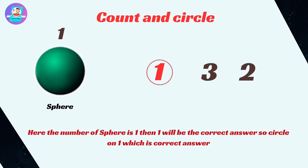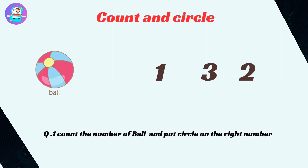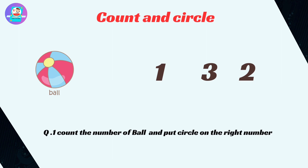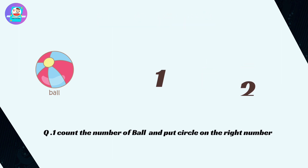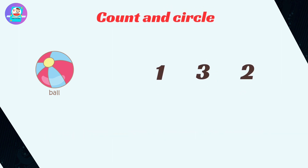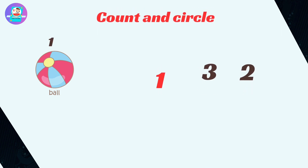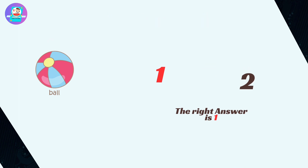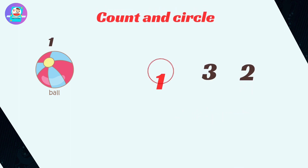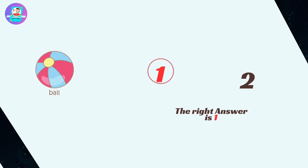Let's start. Count the number of ball and put circle on the right number. Let's count the number of balls here. Okay, this is only 1. Here the number of balls is 1, then 1 will be the correct answer. So put circle on 1 which is correct answer.